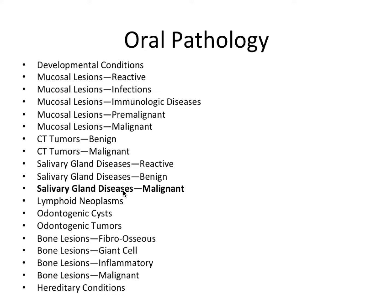All the ones we're going to talk about here are most common on the palate. For benign tumors of salivary glands, we had some on the palate and the parotid gland, like the pleomorphic adenoma, and the Warthin's tumor that was most common on the parotid gland. But salivary gland diseases that are malignant are always most common on the palate.